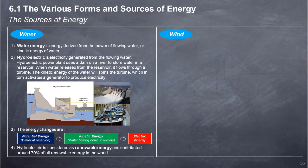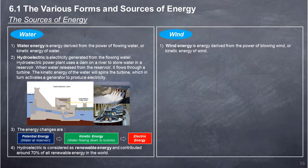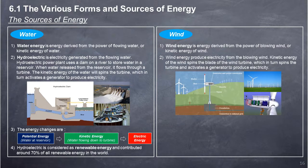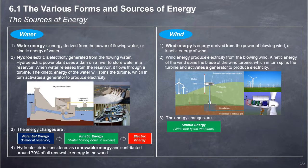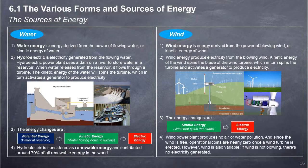Wind Energy: Wind energy is energy derived from the power of blowing wind, or kinetic energy of wind. Wind energy produces electricity from the blowing wind. Kinetic energy of the wind spins the blades of a wind turbine, which in turn spins the turbine and activates a generator to produce electricity. The energy change is: kinetic energy of wind spinning the blades → electric energy. Wind power plants produce no air or water pollution, and since wind is free, operational costs are nearly zero once a turbine is erected. However, wind is variable — if wind is not blowing, no electricity is generated.